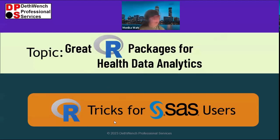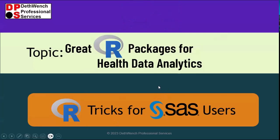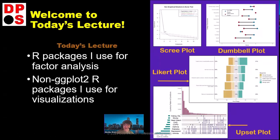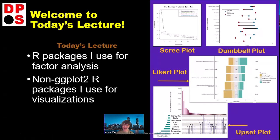Make sure you download the slides, because I'm going to show you some links. On the screen right now you'll see there are four plots: the Likert plot, the upset plot, the dumbbell plot, and the scree plot. These are unusual plots — not the ones you normally see in biostatistics.